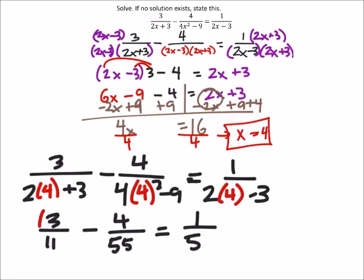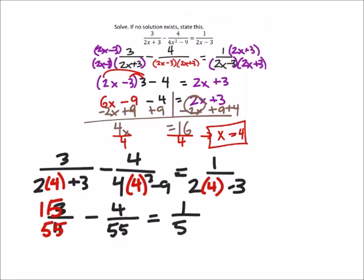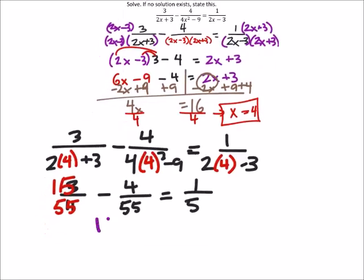If I scaled this up, I would have 15 over 55. And 15 minus 4 is 11. A little bit more space. 11 over 55, which does equal 1 fifth. So, our answer of x equals 4 checks out. You may not need all those fractions because of calculators, but there you go.